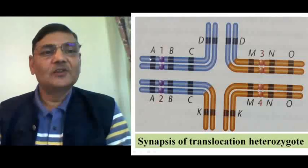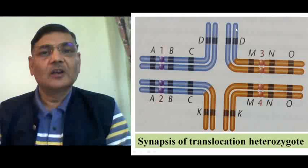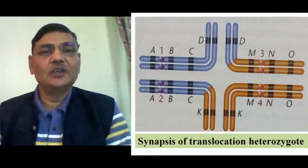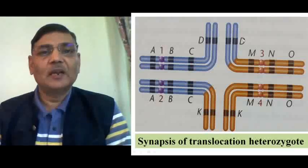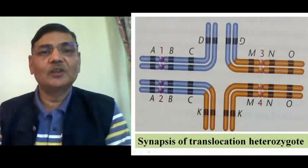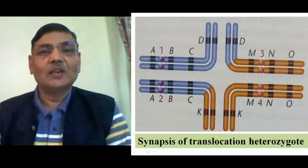Similarly, if the chromosome A, B, C, D goes with the translocated chromosome D, M, N, O, there will also be abnormality in the gamete — A, B, C, D genes will be present along with a duplicate D, while gene K will be missing. So there will be deletion of K and duplication of D, meaning that gamete will also not be normal.